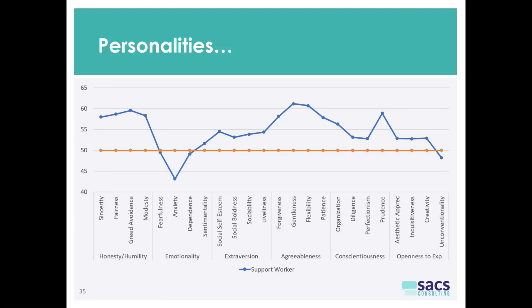And then we look at openness to experience. Openness to experience is how broad-minded people are — about population average, just maybe a fraction above. Unconventionality — being comfortable with ideas that seem unusual — is just about population average. So this sector is around population average or a little above in terms of preparedness to do things a new way from a personality point of view.